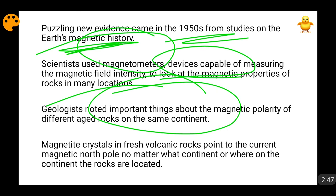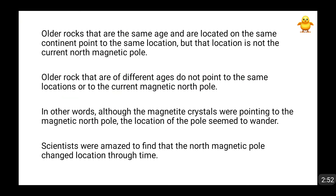When some older rocks of the same age were analyzed on the same continent — for example on Africa — fresh volcanic rocks pointed to the current magnetic north. But when older rocks of the same African continent were analyzed, they pointed to the same location as each other, but that location was not the current magnetic north pole. This means their magnetic alignment is different, yet they are on the same continent.